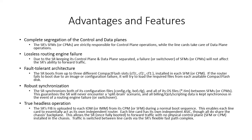The last feature is probably my favorite: true headless operation. The service router's forwarding information base is uploaded to each input-output module from its control plane module during a normal boot sequence. This enables each line card to essentially act as its own independent router. Each line card has its own independent ASIC, though all do share the same chassis backplane. This allows the service router, once fully booted, to forward traffic with no physical control plane installed in the chassis. Traffic is switched between line cards via the service router flexible fast path complex. This doesn't mean the SR will perform headless in the same fashion as with a control plane — the line cards will continue to forward traffic, but any control plane operations will be out the window: routing updates, link state updates, LDP signaling, and so on will not function.